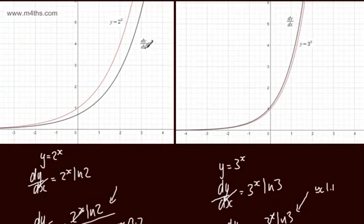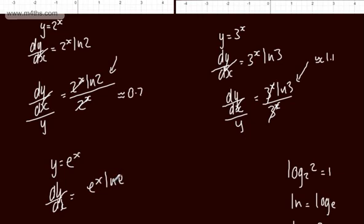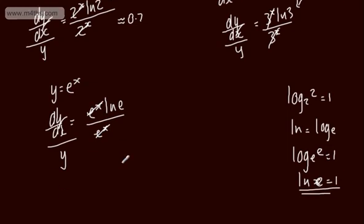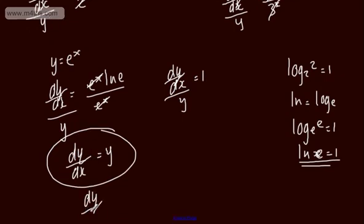So let's now consider the function e to the x. If y equals e to the x, then following the same protocol, dy by dx equals e to the x multiplied by the natural log of e. Now the natural log of e is just 1. So if we divide the derivative by y, we get e to the x times 1 divided by e to the x — the e to the x's cancel. Therefore dy by dx equals y. Since y equals e to the x, dy by dx equals e to the x. And that is hugely important.